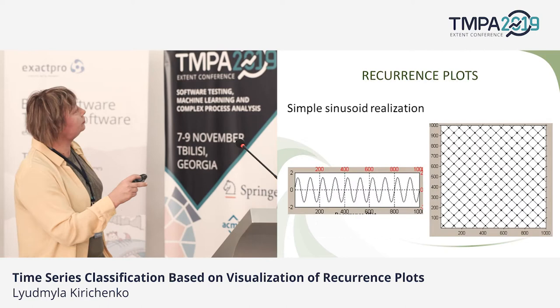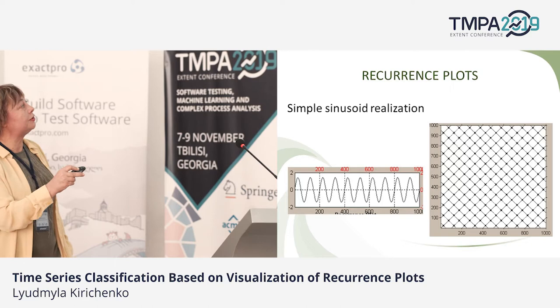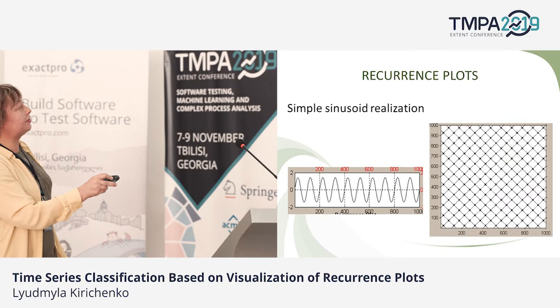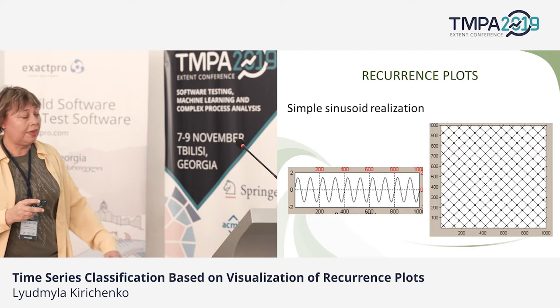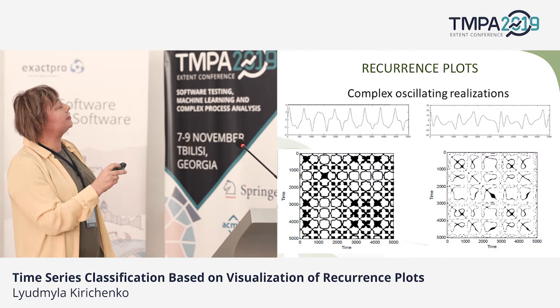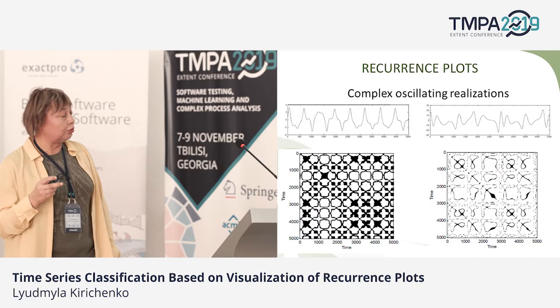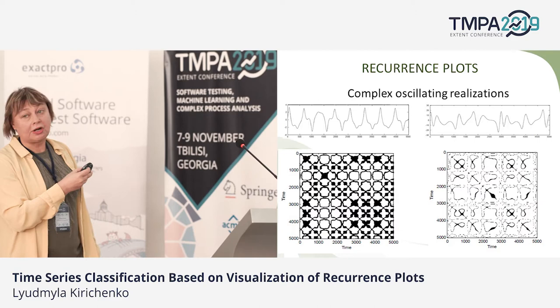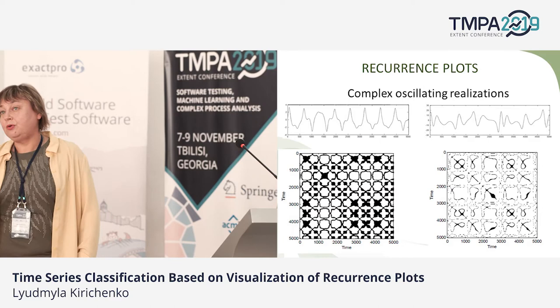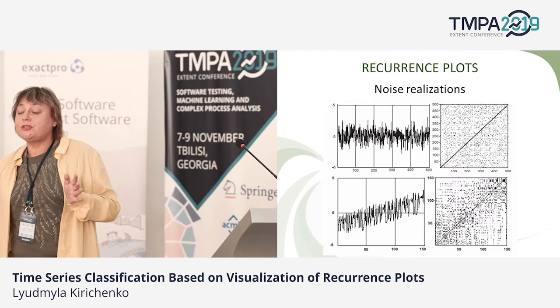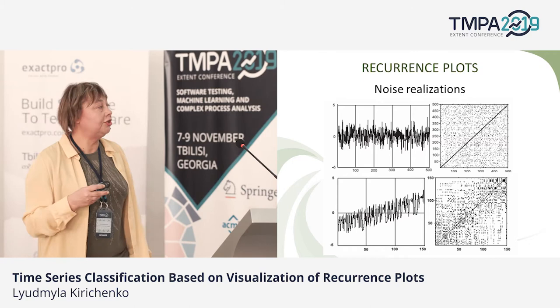The recurrence plot shows us the recurrent structure of a time series. For example, for a simple sinusoid realization, the recurrence plot has a periodic structure — it shows our recurrence period. If we have a more complicated oscillation realization, we can build a recurrence plot, and it presents the structure of the time series. Different time series have different recurrence plots. If we have a noisy realization, the points of the recurrence plot are not connected to each other.